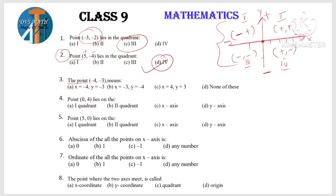Next question: Point (-4, -3). X value is minus 4, Y value is minus 3 — both minus, so it's the Third quadrant. Next: Point (0, 4) lies on which axis? When x is 0, the point lies on the y-axis. So (0, 4) lies on the y-axis. Similarly, (5, 0) lies on the x-axis.